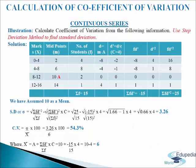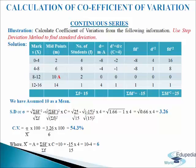Now we will understand calculation of coefficient of variation in continuous series using the step deviation method. We have taken the same illustration as used in continuous series for standard deviation. We will make a table of 8 columns. In the first column we write marks (X): 0 to 4, 4 to 8, 8 to 12 and 12 to 16. In the second column we write midpoints (M): 2, 6, 10 and 14, with 10 taken as assumed mean.